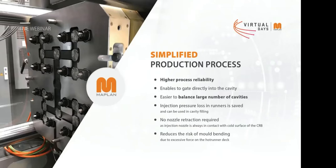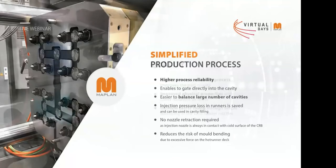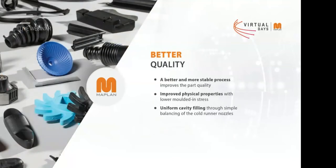We also reduce the risk of mold bending. In a hot runner mold, injection at one center point causes bending of the mold plate. With a cold runner block, this force is split up across 4, 8, or 60 points through the cold runner nozzles. In the end, cold runner technology delivers better quality through a more stable process, less material stress in comparison to a hot runner mold, and uniform cavity filling across all cavities.